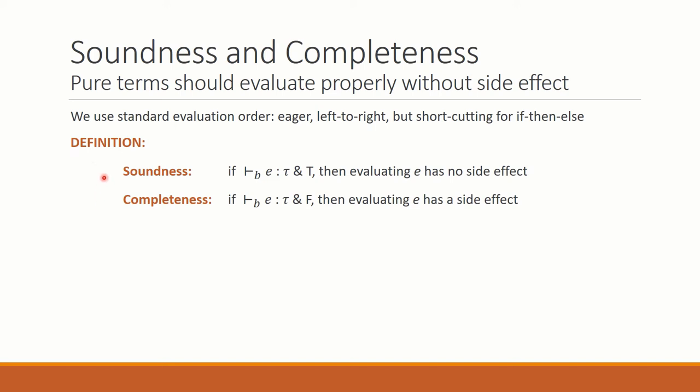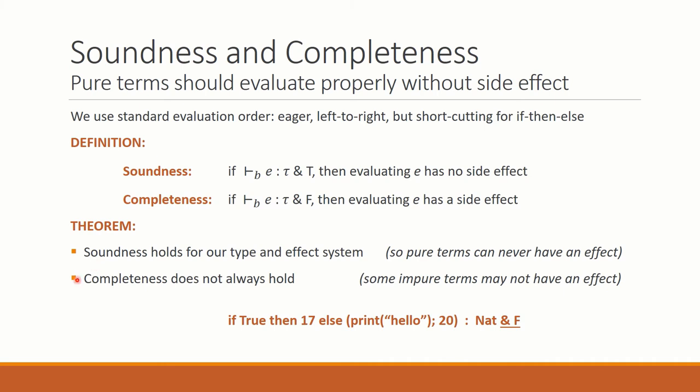Let's define soundness and completeness. In this setting, soundness means that if an expression e is pure, then evaluating it will not show a side effect. On the other hand, completeness would mean that if an expression has effects false, then evaluating it would show a side effect. What is the situation? In our calculus, soundness holds. This means that pure terms will never have an effect. However, completeness does not always hold. Some terms might have effect impure, but still show no effect.